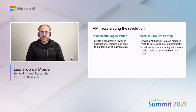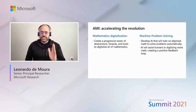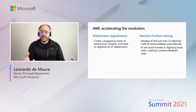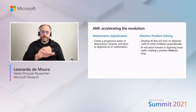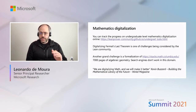We believe the AMI project will accelerate the revolution. This project has two main pillars. On one side, we have the mathematics digitalization efforts, where we are creating a progressive tower of abstractions, libraries, and tools to digitalize all mathematics. This part will feed the second one — the machine problem solving part — where we are developing AI that will train on digitized math to solve problems automatically. This AI will assist humans in digitizing more math, creating a positive feedback loop. Today, you can track progress on undergraduate level mathematics digitalization online. A lot has been done, but there is a long way to go.